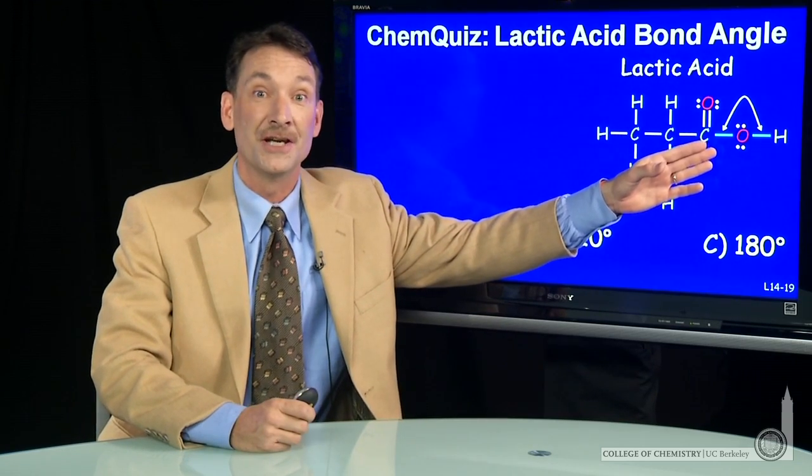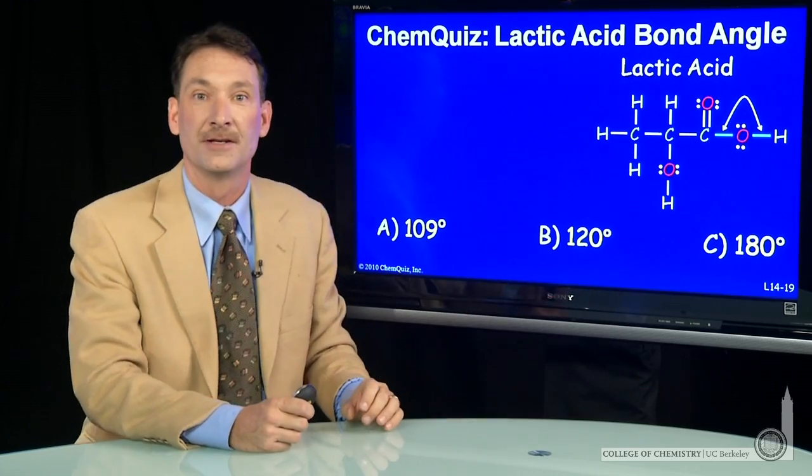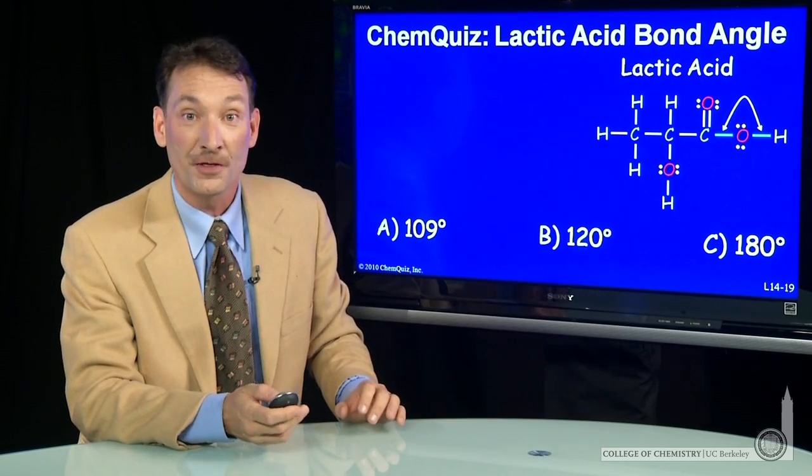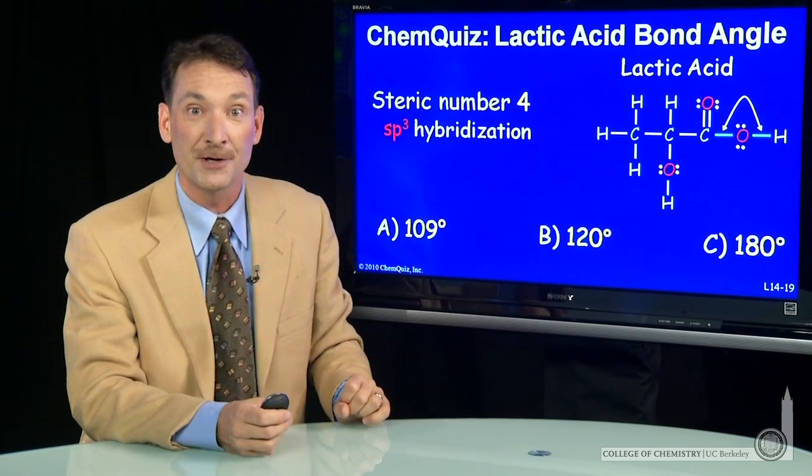the Lewis dot structure isn't predictive about bond angles until you use it to get the steric numbers. So the steric number on oxygen here is 4, 1 carbon, 1 hydrogen, and 2 lone pairs. Oxygen has to accommodate 4 things,